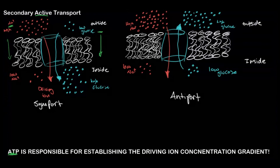Now let's look at antiport. The only thing that changes in antiport is the direction. The driving ion — sodium — and the molecule of interest — glucose — are going in opposite directions. Sodium's concentration gradient goes from high to low outside to inside, and we use that energy to pump glucose from low concentration inside to the outside of the cell. ATP is again responsible for establishing that driving ion concentration gradient by keeping sodium high outside the cell.